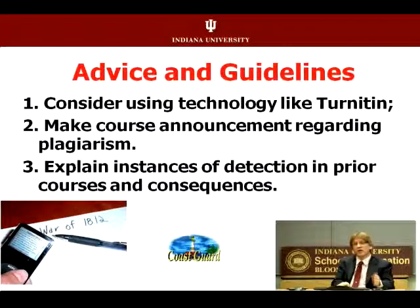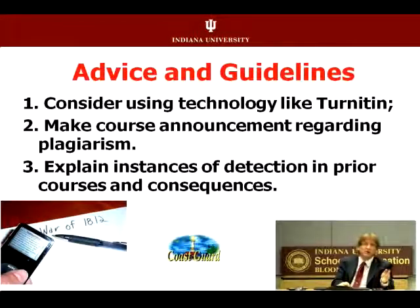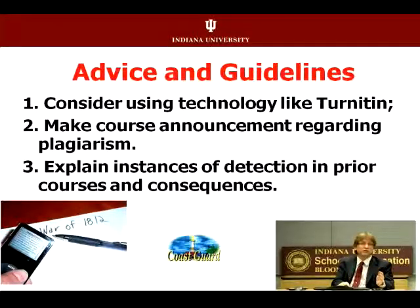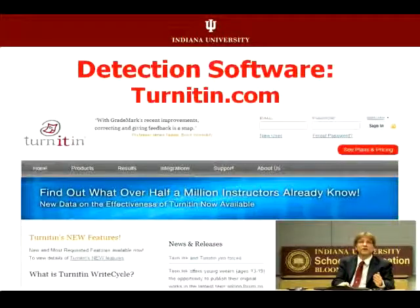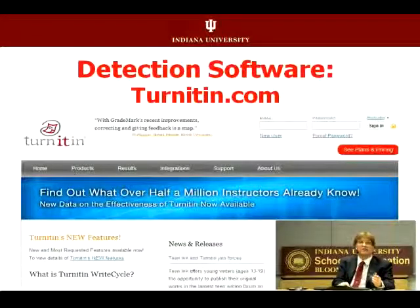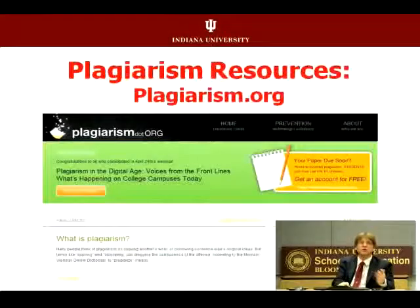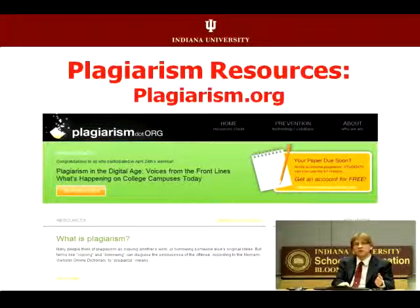With Turnitin, think of it as red light, green light, yellow light — green means it's pretty good and hasn't been plagiarized, yellow means maybe, and red means a lot has been flagged. Have course announcements regarding plagiarism and the consequences so students know. Let them know what happened in previous classes. Compare papers with other instructors — put all papers in, or maybe just those suspected of plagiarism.